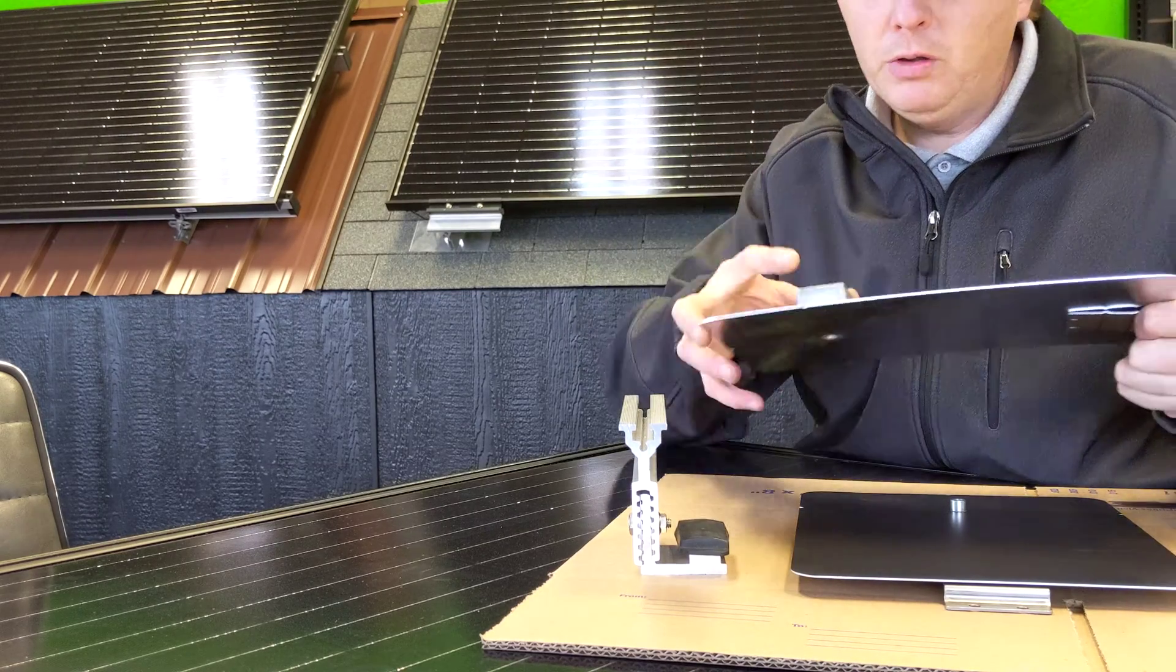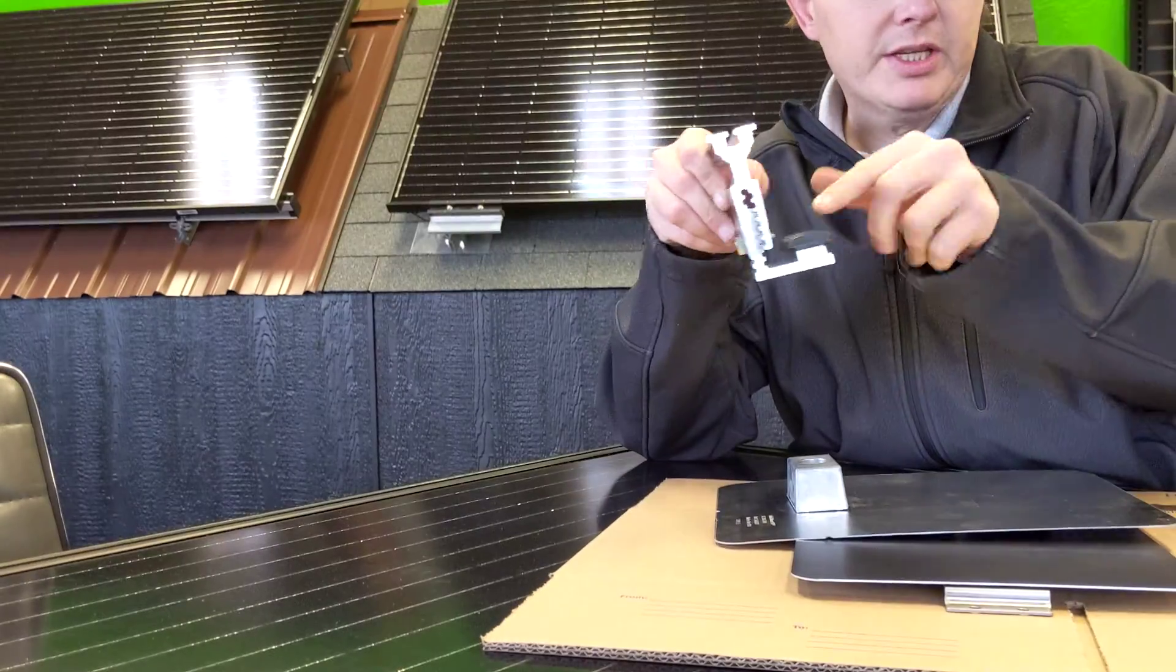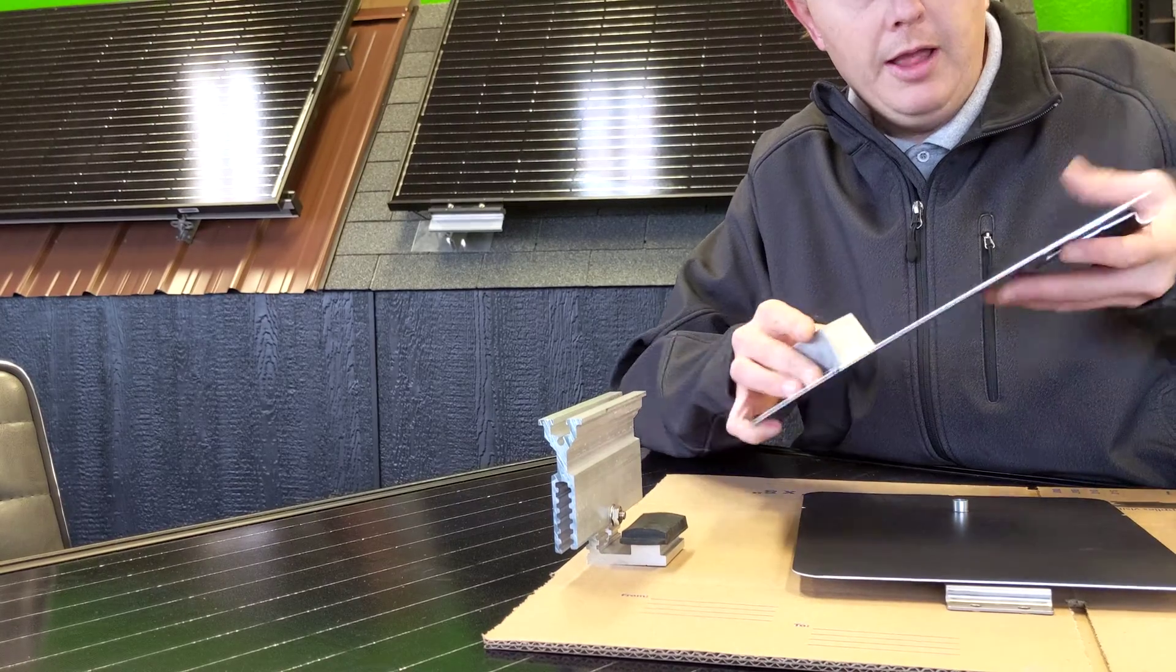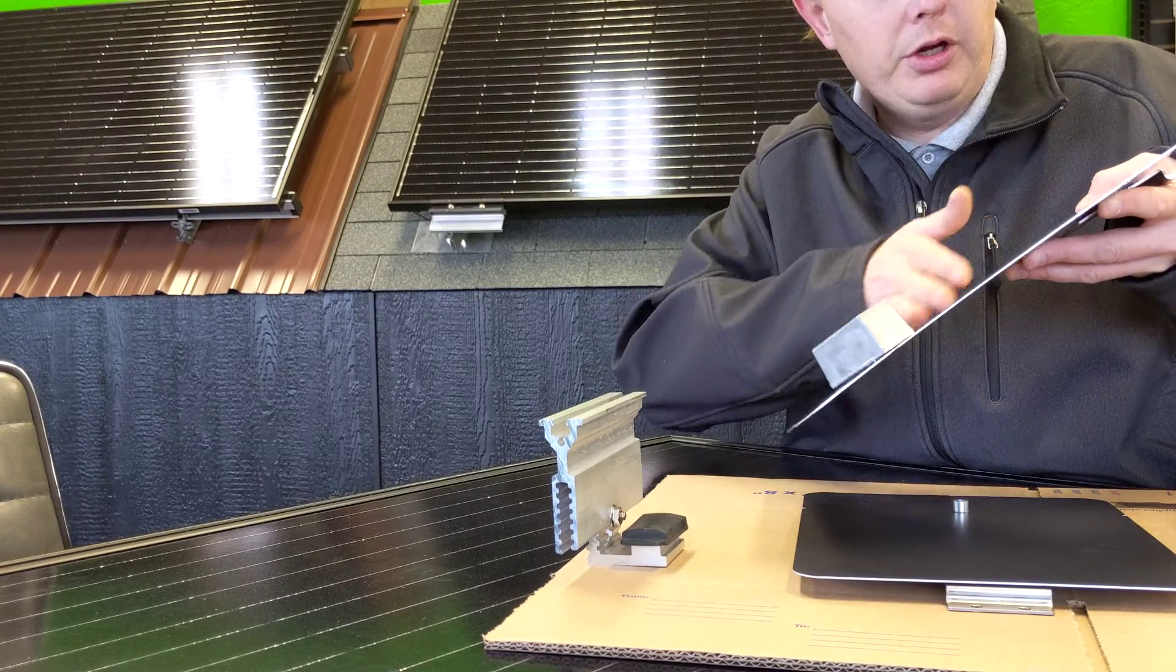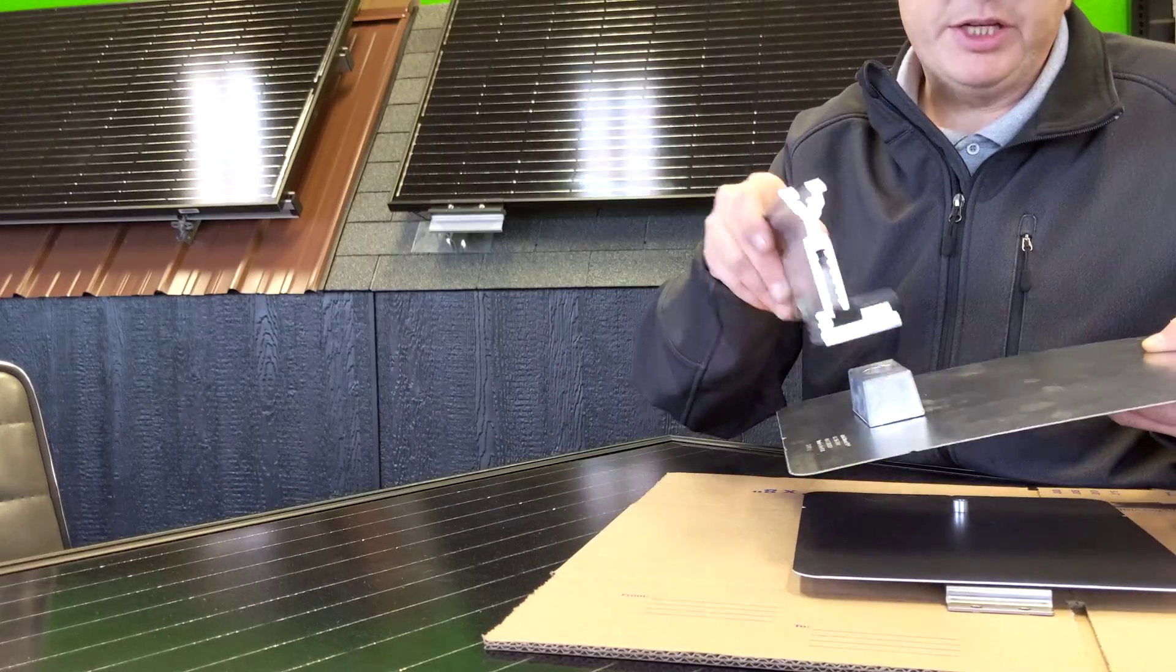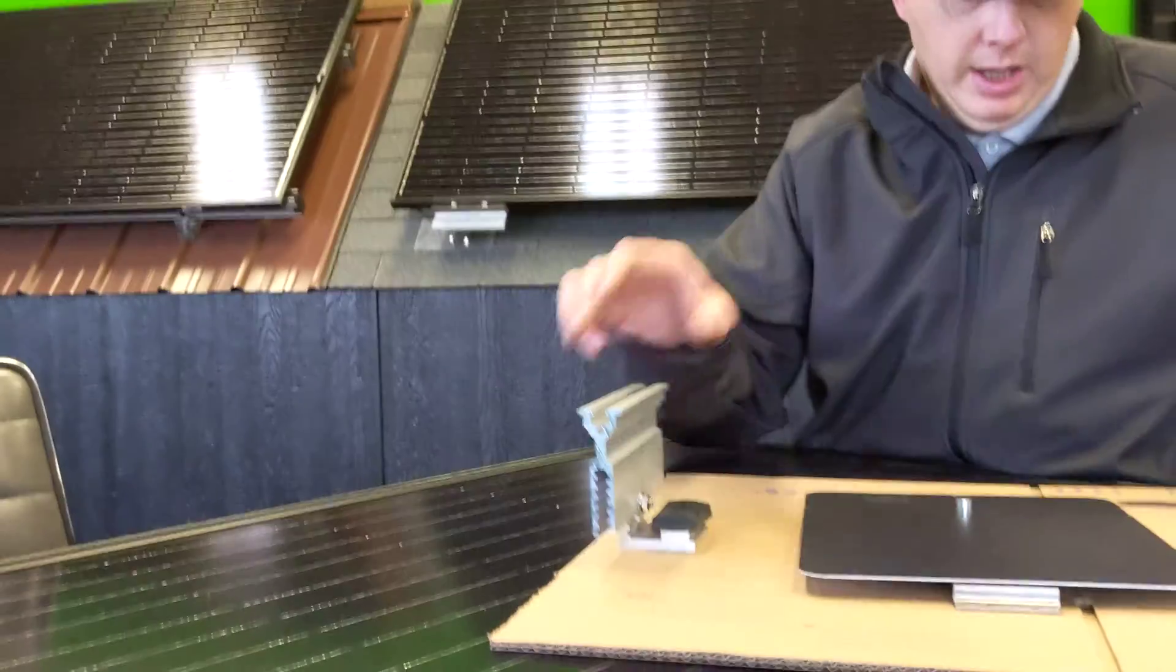This block right here would be equivalent to what this guy is. This is what slips up underneath the shingle. Nothing tacks up down here, it's just up underneath to keep water and everything going down. Then you have your one contact point here.